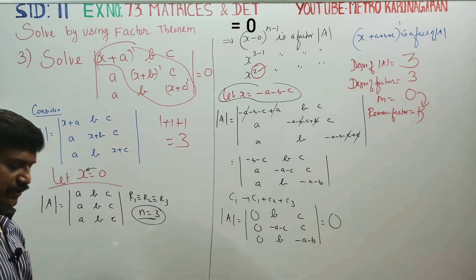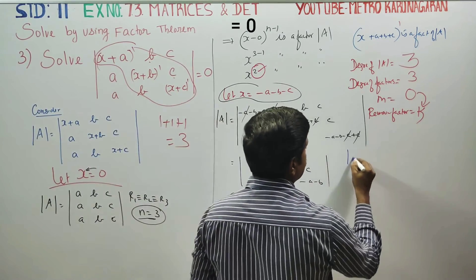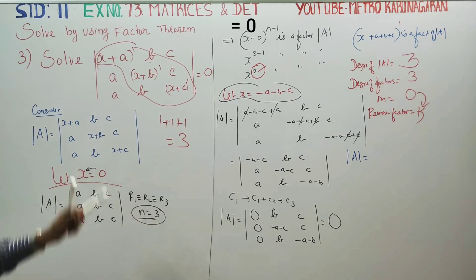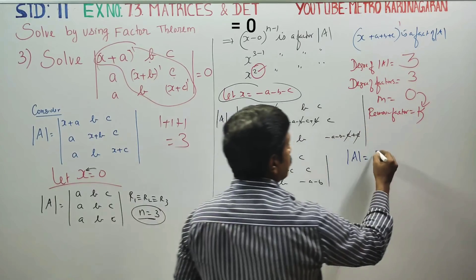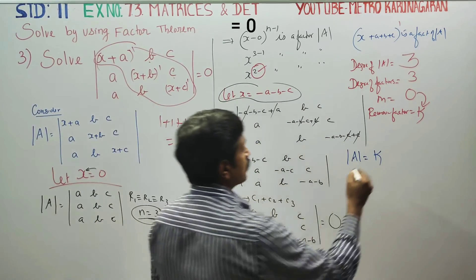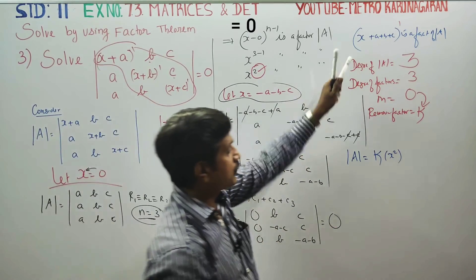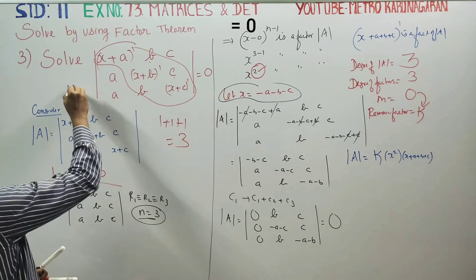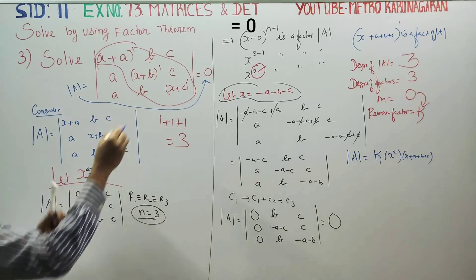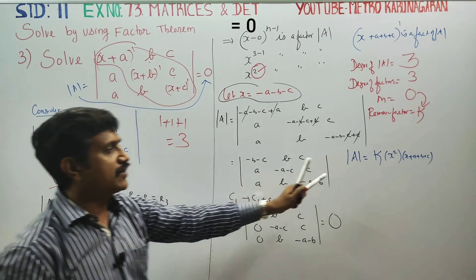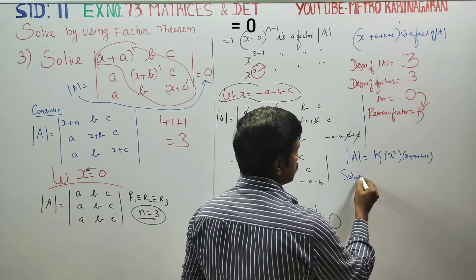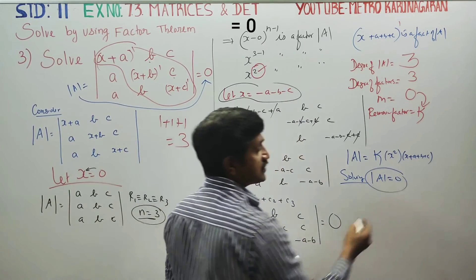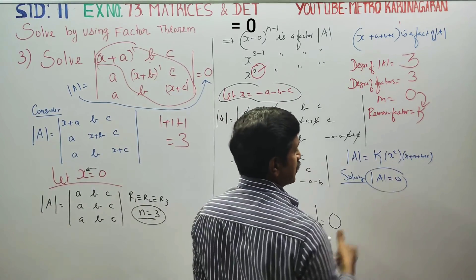We now substitute values to find k. Determinant A is going to equal k times x squared times (x + a + b + c). By substituting a specific value into both the original determinant and this expression, we can determine k. Solving, the determinant A equals 0 when compared, giving us k equals 1.